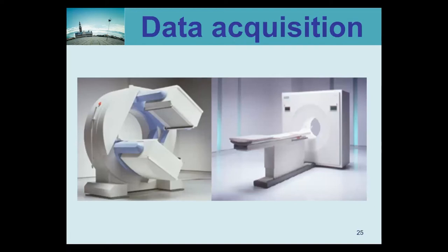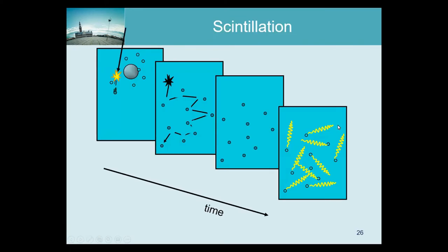The next several slides are about data acquisition. We will look at gamma cameras, which typically consist of a single crystal with photomultipliers, or PET systems which consist of modules. In both cases the principle is scintillation. We have a scintillator block with atoms, and a photon with a lot of energy — a hundred or a few hundred kiloelectron volts — comes in and interacts with an electron.